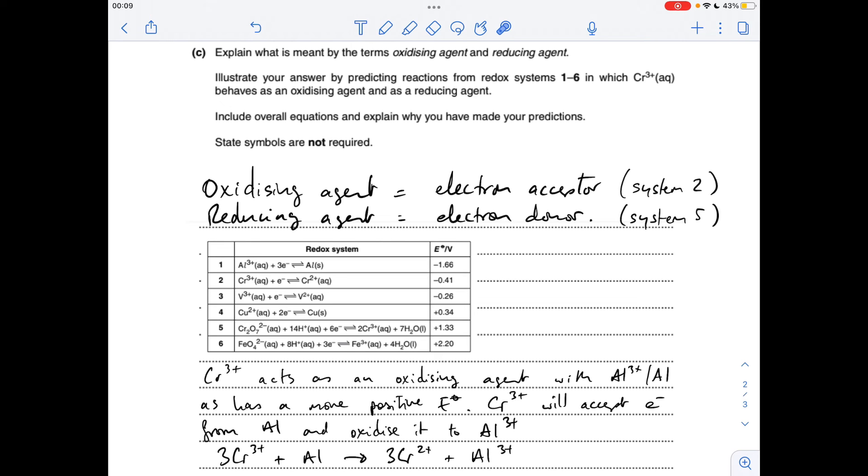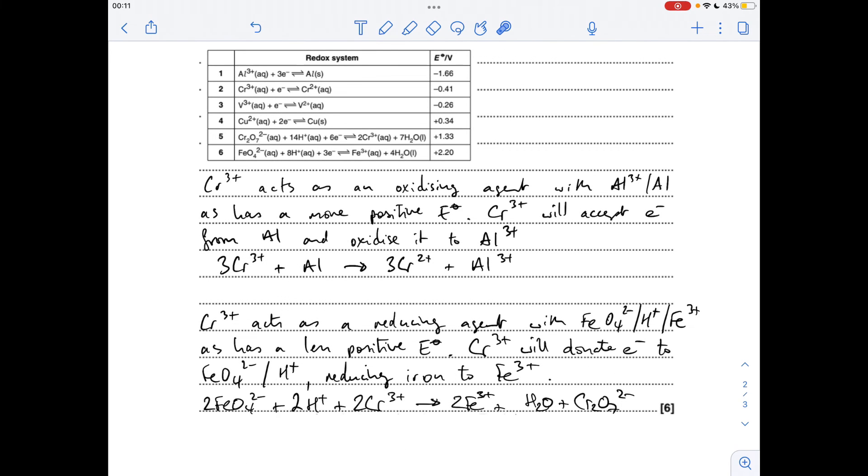Really similar wording to before - I'm saying chromium 3+ acts as a reducing agent with this system here because it's got a less positive electrode potential. So chromium 3+ ions will donate electrons to the FeO4 2-/H+ and reduce the iron to Fe3+. And there's that overall equation with the canceling having been done.